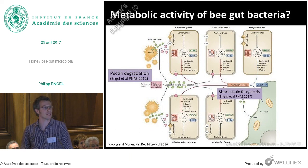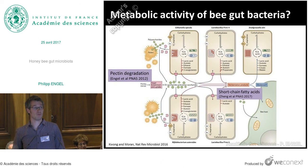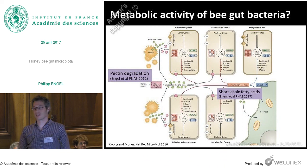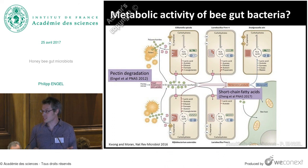Do we have experimental evidence for this? Yes, but only very little. We know from work I've done in Nancy's lab that one of these bacterial members is actually able to degrade pectin, which is part of the primary plant cell wall. And in the paper which was published last week, they could indeed show that short-chain fatty acids and other fermentation products actually accumulate massively in the bee gut to a similar extent as in the mammalian gut — a very similar system.